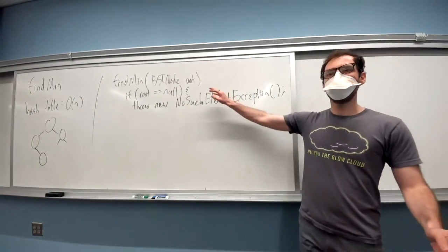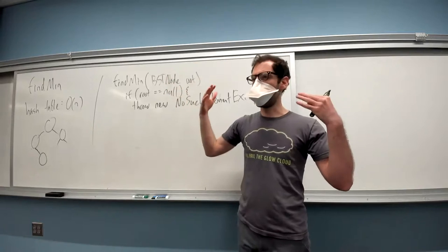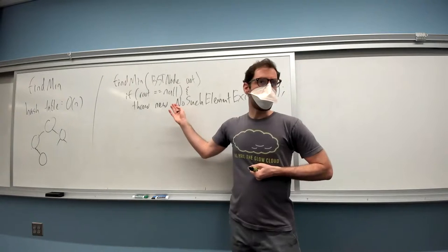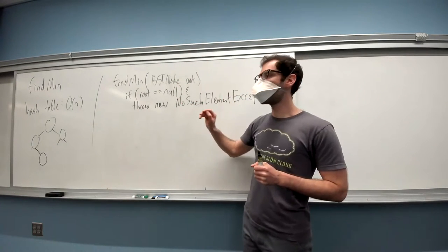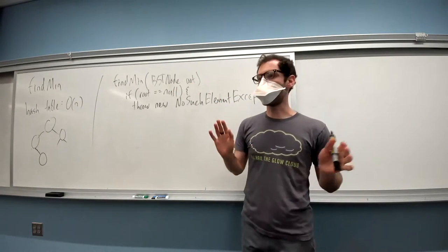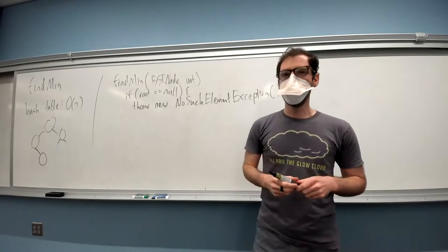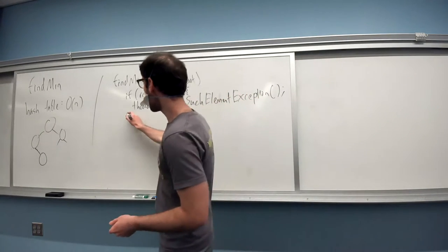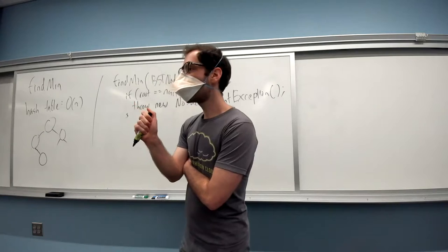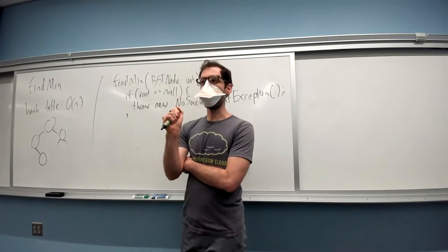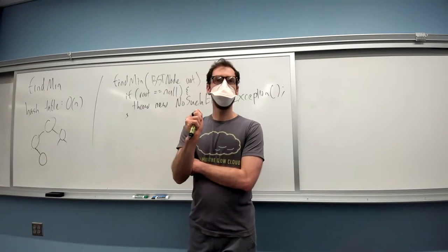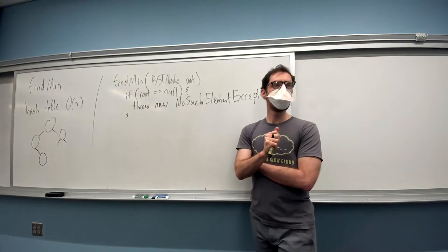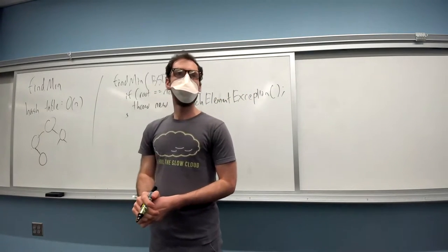Finding min in an empty tree is an undefined operation. If someone calls find min on an empty tree, throwing an exception is a reasonable response. It's important to check for this case and do something, because if you don't and you get to root.left, you'll have a null pointer exception. The next step: if root.left is null, we have found the minimum. You could specify this to return the minimum key, the value, or the node itself — any of those could be a version of find min.